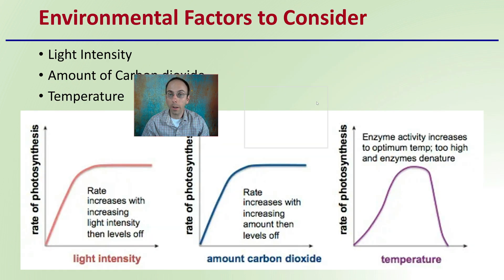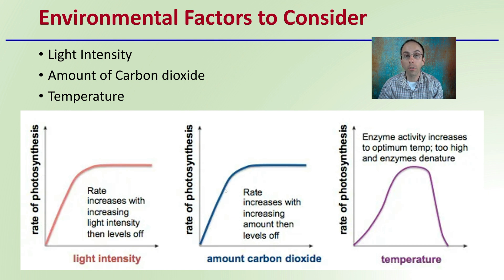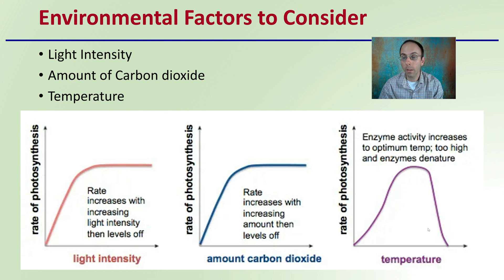The environmental factors to consider with the plant in general are light intensity, the amount of carbon dioxide, and temperature. As light intensity increases, there will be a certain plateau. The same goes with the amount of carbon dioxide — you can increase the concentration of carbon dioxide, which will increase the rate of photosynthesis. With temperature, there will be a rise to an ideal or optimum temperature, and then a falling off from there.